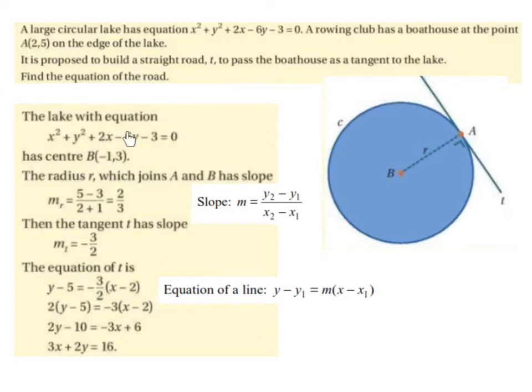Then we take the coefficient of y, which is minus 6. We half it, which is minus 3, and change the sign, which is 3. So this centre point here is (-1,3).